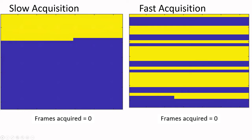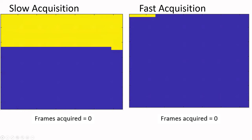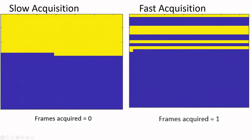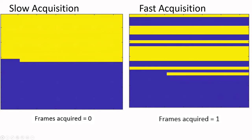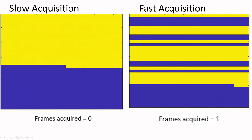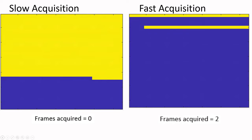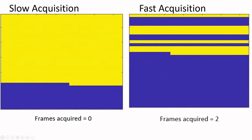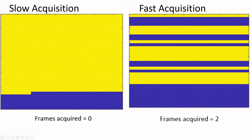In this animation, the yellow represents the data that is acquired and the blue represents the data that is not acquired. The topic researchers are exploring is how we can form high-quality images using less data so more images can be acquired rapidly. The fast acquisition gets more frames per second by measuring less data, and the slower acquisition measures the data fully but at the cost of speed.